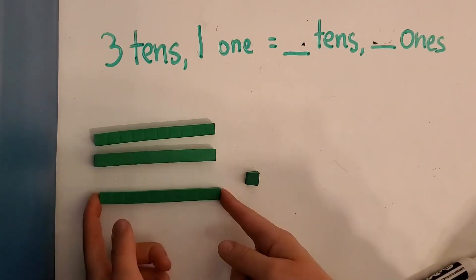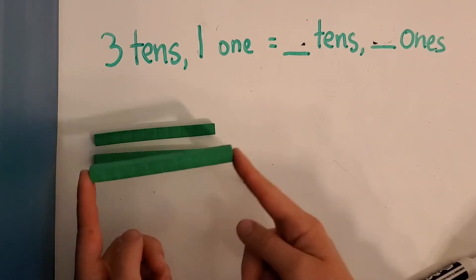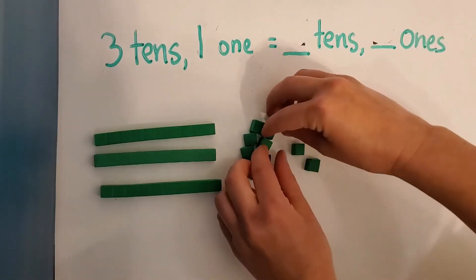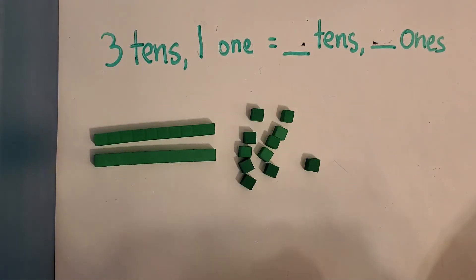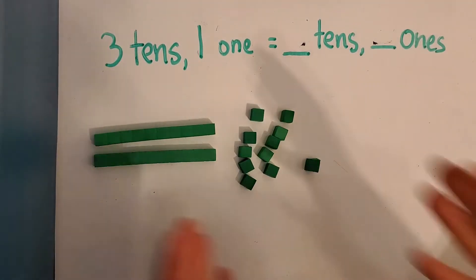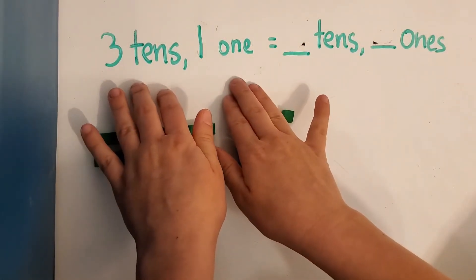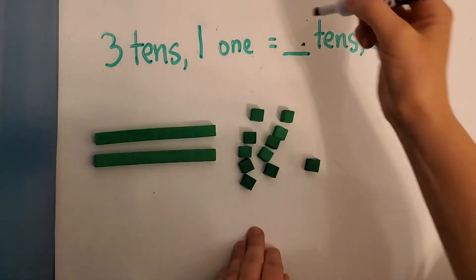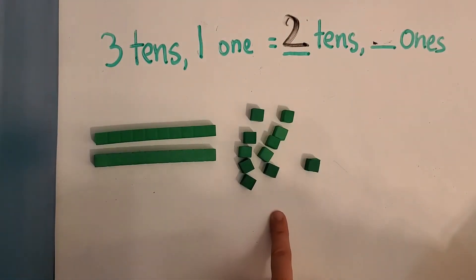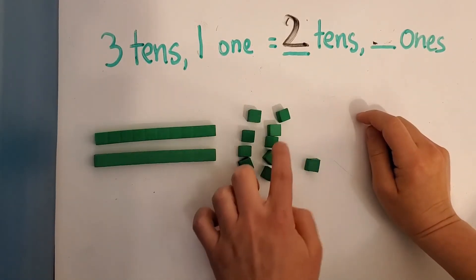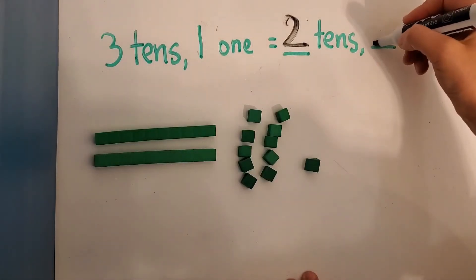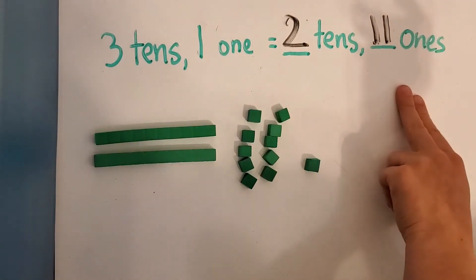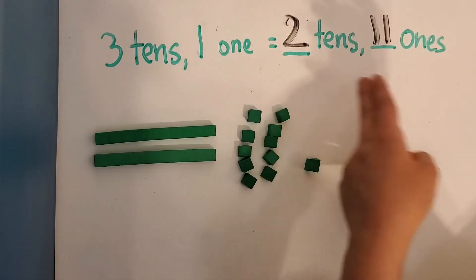So we're going to regroup our ten rod into how many ones? Ten ones, right? Because one ten rod is equal to ten ones. So let's get our ten ones in here and take away one ten rod, because we are trading them. We're trading the ten ones for the one ten rod — it's an equal trade, still the same as three tens, one one, just a different number of tens and ones. So how many tens do we have now? One, two — we have two tens. And how many ones? One, two, three, four, five, six, seven, eight, nine, ten, eleven. We have eleven ones. So two tens and eleven ones.